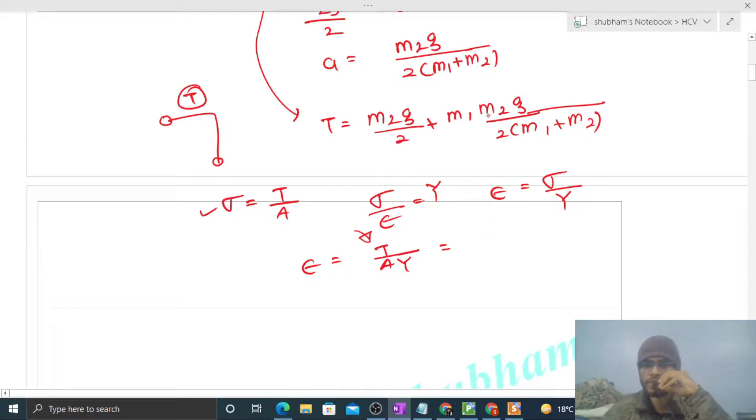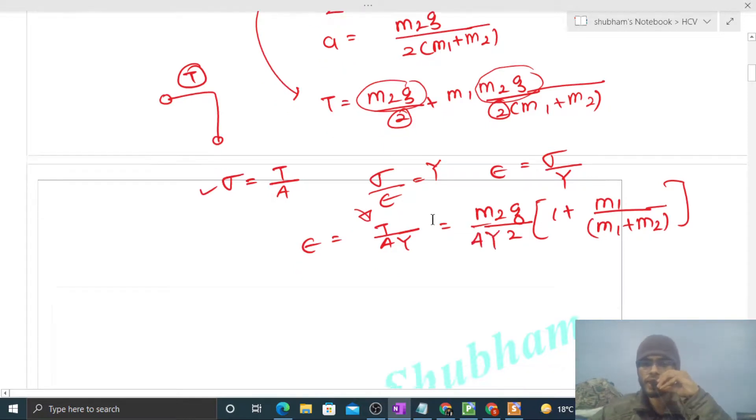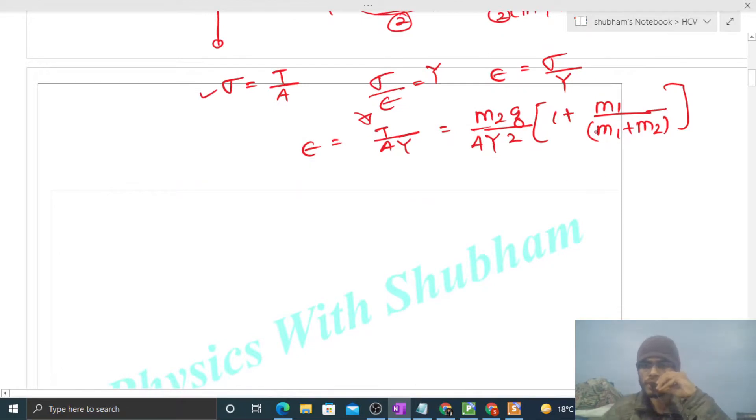We can write tension by taking m2g out. So m2g comes out, by 2 comes out, and inside what remains is 1 plus m1 divided by m1 plus m2. This is the value of tension divided by A and Y. This is the value of strain.